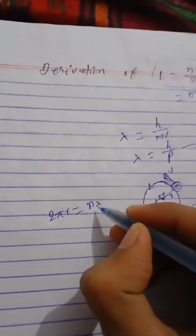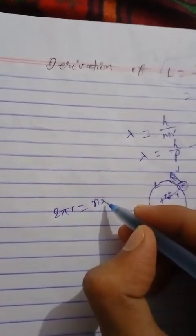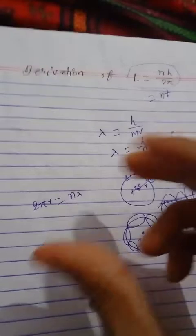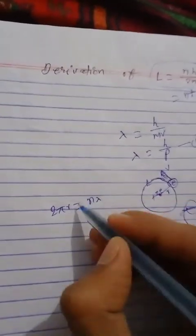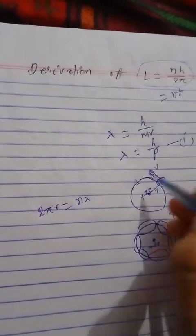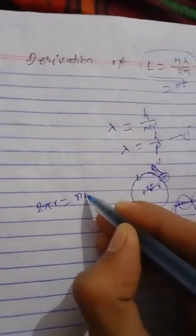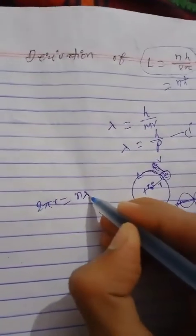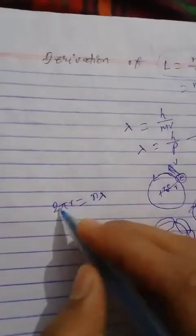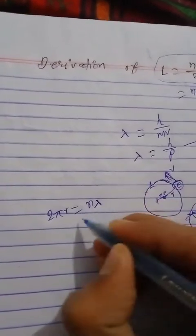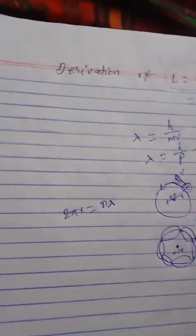It will not be the odd integral multiple of lambda, because otherwise such waves will interfere destructively and will disappear. So for the standing waves to be formed, the length of the string, or here the circumference of the orbit, must be equal to the integral multiple of lambda, where lambda is the wavelength.